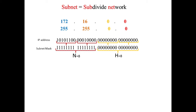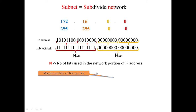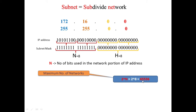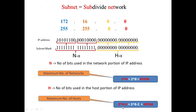To understand this with an example: we have been given the IP address 172.16.0.0. We know this is a Class B IP address, and with this address and its mask we know that the network portion has 16 bits and the host portion also has 16 bits. The maximum number of networks with this Class B IP address is 2 raised to the power n, which gives 65,536, and the maximum number of hosts is 2 raised to the power h minus 2.